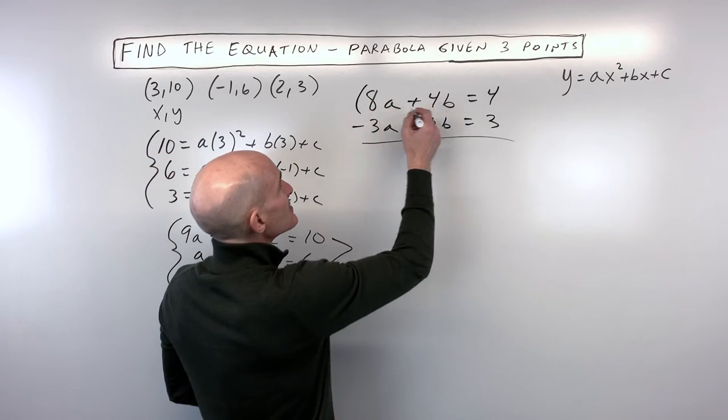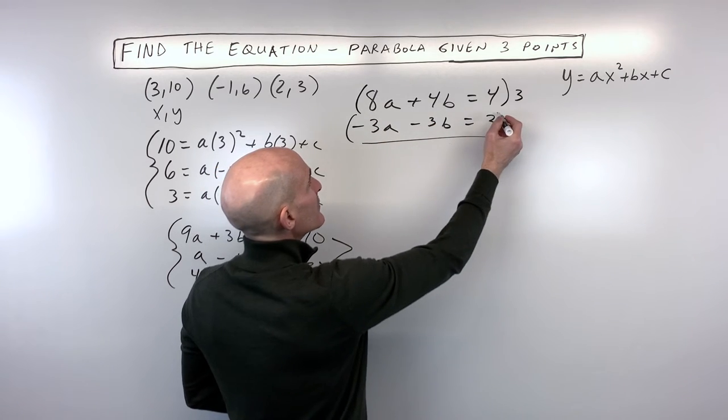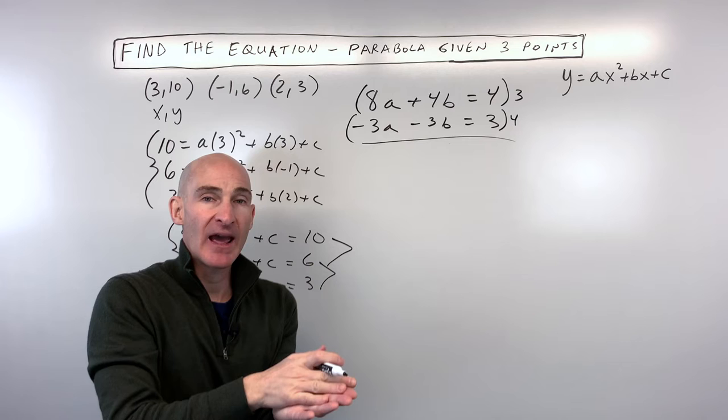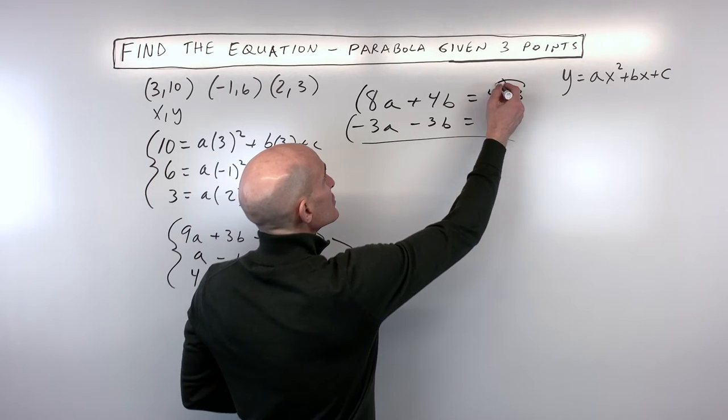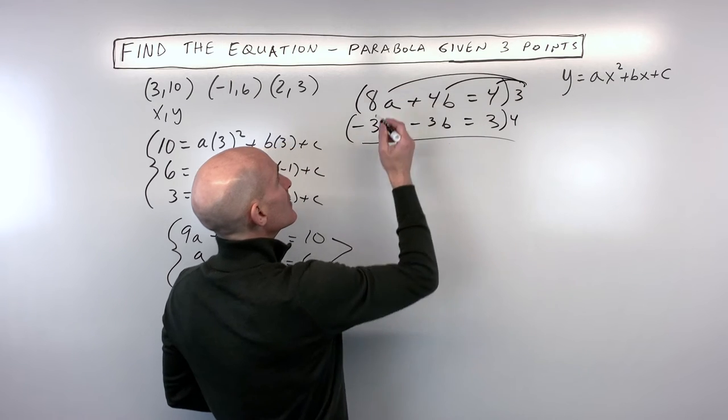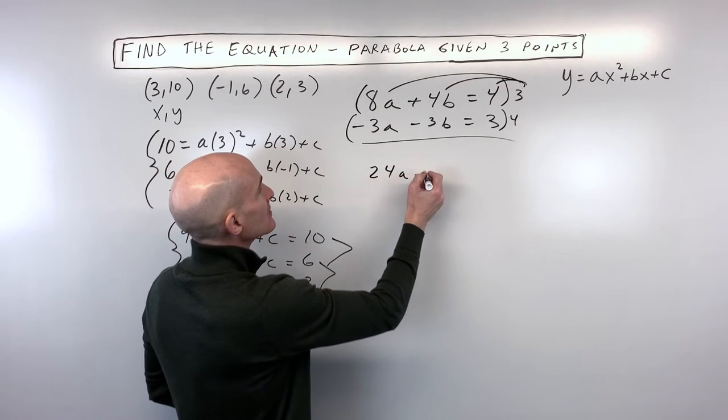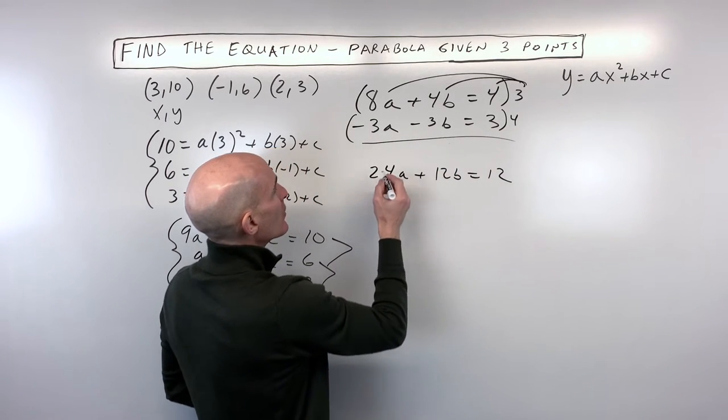So I'm going to multiply this top equation by 3. So that'll give us 12b. I'm going to multiply this bottom equation by 4. That'll give us negative 12b. Then we can add the two equations together to eliminate the b's. So first let's distribute the 3 to the whole equation. Make sure you do it to the left and right sides. Let's multiply this bottom equation by 4.